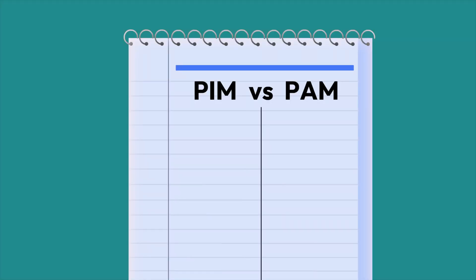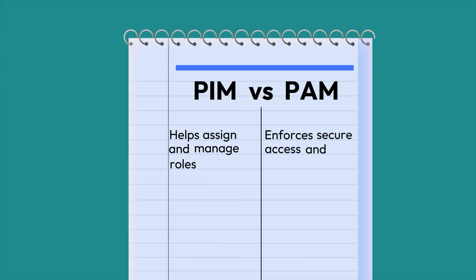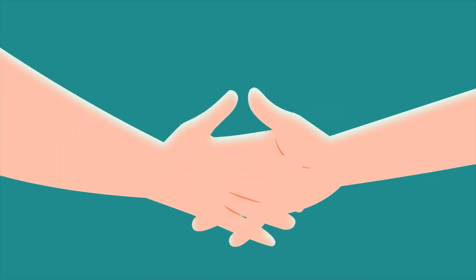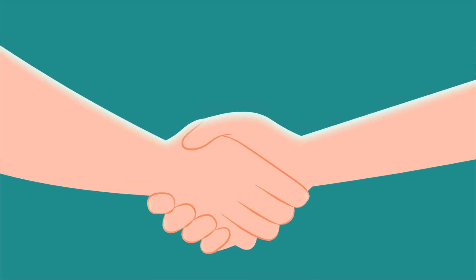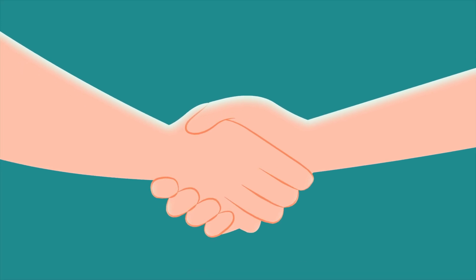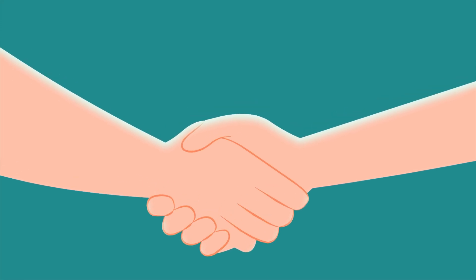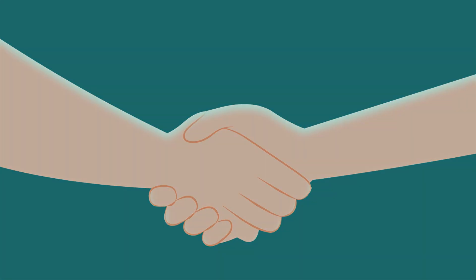PIM and PAM are like teammates. PIM helps assign and manage roles, while PAM enforces secure access and monitors activity in real time. Together, PIM and PAM provide a comprehensive approach to managing privileged accounts and minimizing security risks.